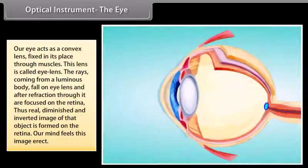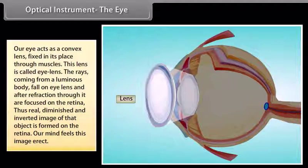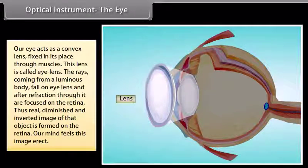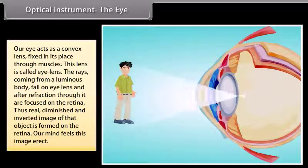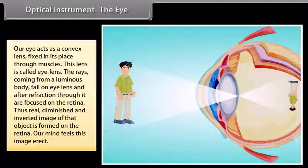Optical instruments — the eye. Our eye acts as a convex lens fixed in place through muscles, called the eye lens. Rays from a luminous body fall on the eye lens and, after refraction through it, are focused on the retina. Thus, a real, diminished, and inverted image of the object is formed on the retina. The mind perceives this image as erect.